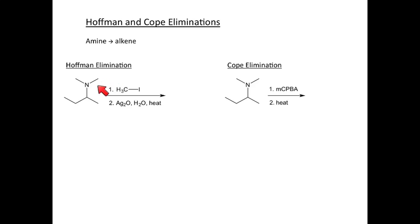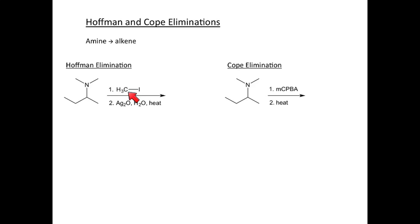Let's start with the Hoffman elimination. We're starting with a tertiary amine here, though you don't always have to start with a tertiary amine. You could start with a primary amine and then, in step one, react it with methyl iodide in excess. But in this case we do have a tertiary amine, so let's go through our mechanism and see what happens.